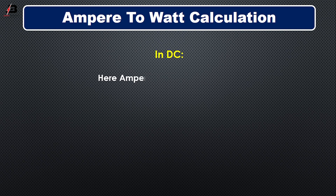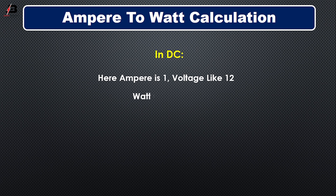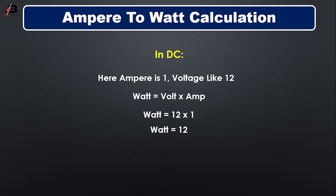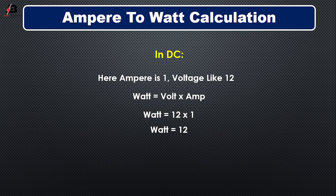In DC, here ampere is 1 and voltage is 12. Using the formula voltage multiplied by ampere: 12 × 1 equals 12 watts. So in DC, if we have 1 ampere current and voltage of 12, the result is 12 watts.